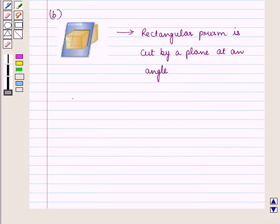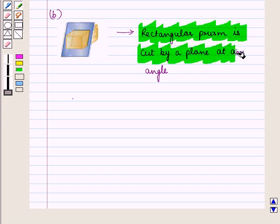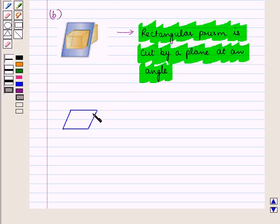And in the B sub-part, this figure is given to us and here this rectangular prism is cut by a plane at an angle. In this case, this is the shape of the cross section formed and here we can see that opposite sides are parallel. So it is the shape of a parallelogram.